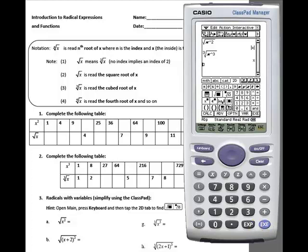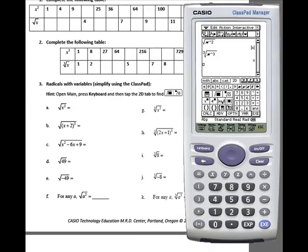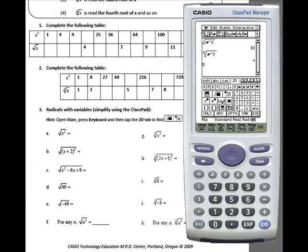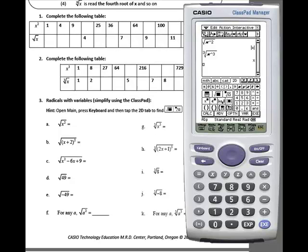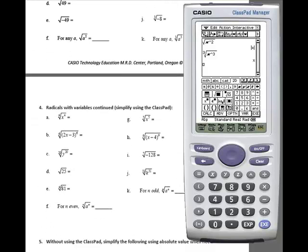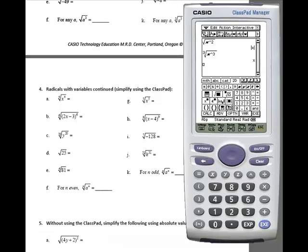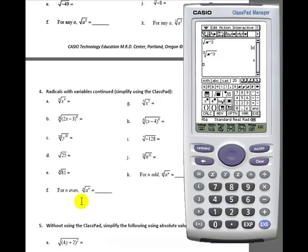They then generalize on their findings with square roots and cubed roots, before moving on to radical expressions with other indices. They then make a conjecture on an even index opposed to an odd index.